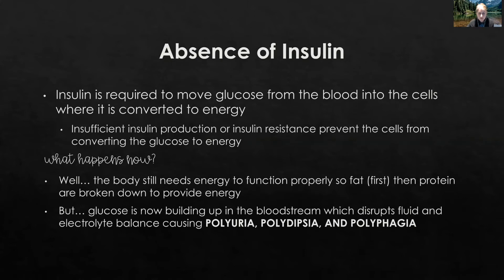The big question is: what happens now? The body still needs energy to function — that doesn't change just because we don't have enough insulin to use glucose. So the body is going to start to break down fat first, and then protein, for energy. Meanwhile, glucose is now building up in the bloodstream because it can't be pushed to the cells. That glucose buildup is going to disrupt fluid and electrolyte balance and cause our three classic signs of hyperglycemia: polyuria, polydipsia, and polyphagia.